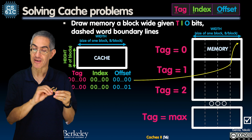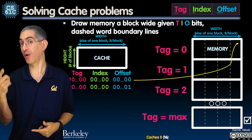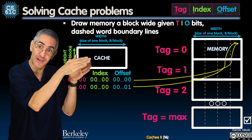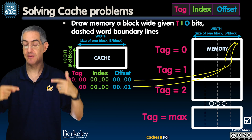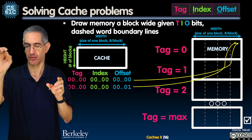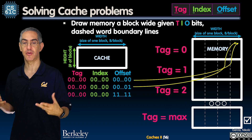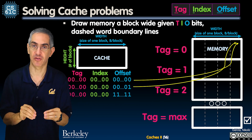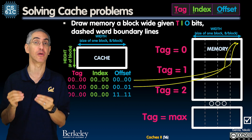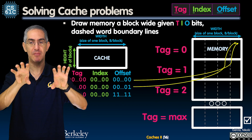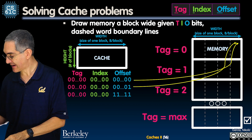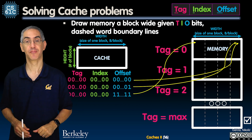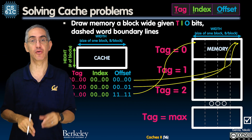As I increment my binary odometer by one, I only change the offset, moving across the top row from right to left. When the offset bits are all ones, I'm at the top left — the last spot before wrapping into the next index. Then the index increments, moving to the next row down.